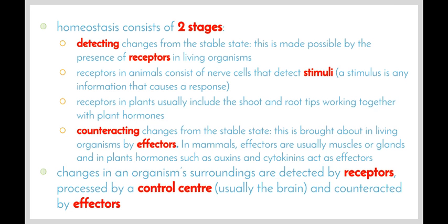In mammals, effectors are usually muscles or glands, and in plants, hormones such as auxins and cytokinins act as effectors. Changes in an organism's surroundings are detected by the receptors, processed by a control center — which in our case is our brain — and counteracted by effectors.